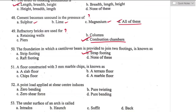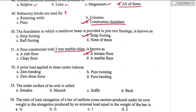Question number fifty-one: a floor constructed with 3 mm marble chips is known as terrazzo floor. Option B is the right answer. Question number fifty-two: a point load applied at the shear center induces pure bending only. The shear center is also called the center of twist — if the external force passes through the shear center, the section is subjected to bending only with no twisting. Option D is the right answer.